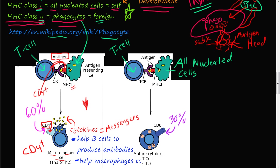The reason it's called a helper T-cell — or CD4 helper T-cell or CD4+ T-cell, there are a lot of different names that all mean the same thing — is because it starts secreting cytokines. Cytokines are messengers; they send messages to other cells of the immune system. What the cytokines do is help B-cells produce antibodies. There's a T-cell population and a B-cell population — we'll talk about B-cells in the next few videos — but the T-cell will send these messengers out to the B-cells to produce antibodies.